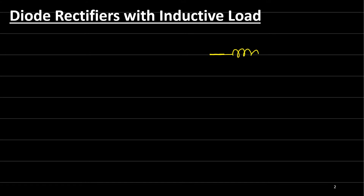The inductor opposes any change in the current that flows through it, and the current waveform then delays according to the value of the inductance.